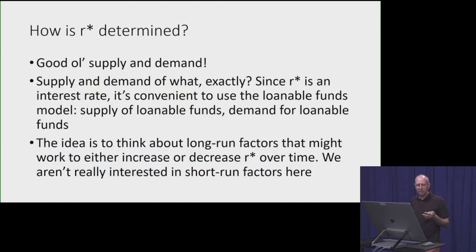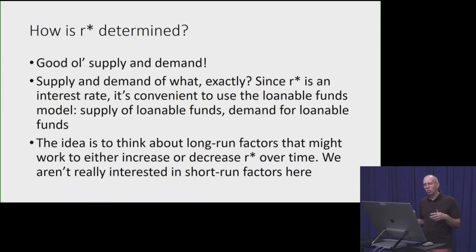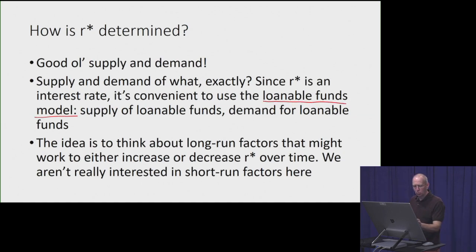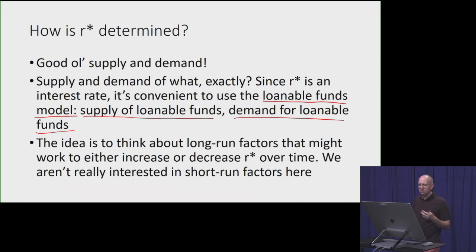Now that we have a definition of r-star, how is it determined? Like most things in economics, we can look at it in the context of supply and demand. Since we're looking at an interest rate, the most convenient framework to use would be a loanable funds model. We have a supply of loanable funds matched up with the demand for loanable funds, and we want to figure out the longer-run factors that will affect r-star by either changing the supply of loanable funds, the demand for loanable funds, or both.